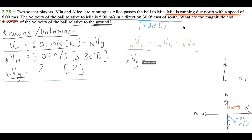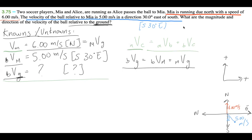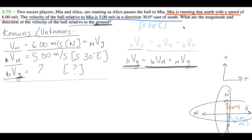Using the chain rule: velocity of ball relative to ground equals velocity of ball relative to Mia plus velocity of Mia relative to ground. We just add those two vectors. Because we have two dimensions — north/south and east/west — I'll call east/west the x-direction (east positive) and north/south the y-direction (north positive), and break everything into components.